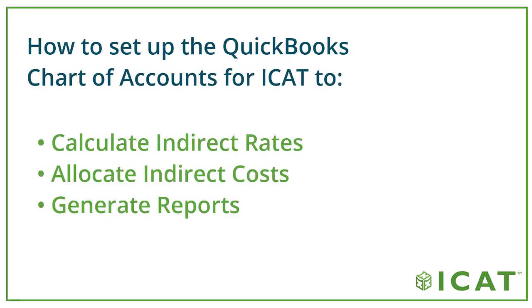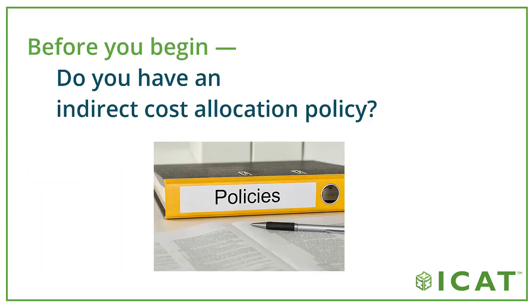Before getting started with iCAT, you'll need to make sure your QuickBooks Chart of Accounts is properly configured for government contracting. In this video, we'll review how to set up your Chart of Accounts to calculate indirect rates, allocate indirect costs, and generate reports within iCAT. Your Chart of Accounts should be organized to reflect your indirect cost allocation policy.